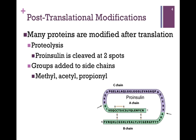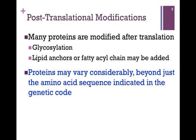Proteins may also be modified by adding groups to the side chains, such as methyl, acetyl, and propionyl groups. Finally, proteins can be modified by adding carbohydrate groups through glycosylation, or by adding lipid anchors or fatty acyl chains as well. In other words, proteins may vary considerably beyond just the amino acid sequence indicated by the genetic code.